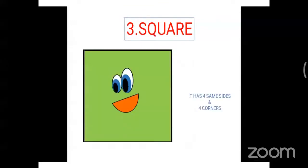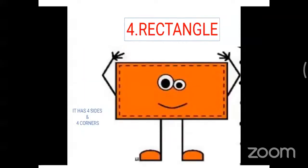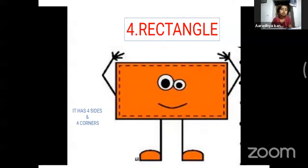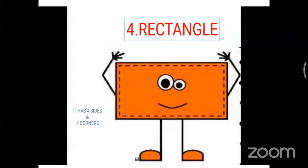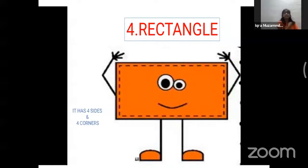Now see the next slide. Which shape is this? Square! How many sides? Four sides. Square has four sides and four corners. Now see the next picture. Rectangle! Very good. This is a rectangle. It has four sides and four corners.